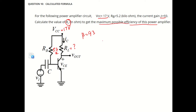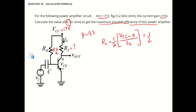So, if we want to write the value of RL, it will be VCC minus the voltage here. For maximum possible efficiency, the maximum drop will be here, so this will be connected to ground — 0 divided by this current. When we are dealing with maximum possible efficiency, we make it half. So RL is half VCC over IC.